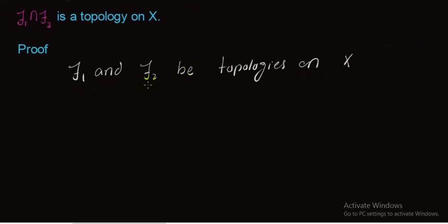We have to prove that the intersection of these two topologies is again a topology on X. We prove three conditions for the topology. The first condition is that finite intersection of members of τ1 ∩ τ2 belongs to τ1 ∩ τ2. The second condition is that arbitrary union of members of τ1 ∩ τ2 belongs to τ1 ∩ τ2. The third condition is that φ and X belong to τ1 ∩ τ2.